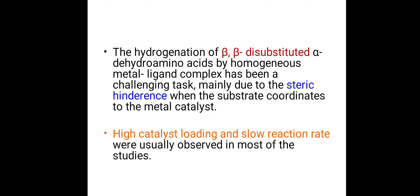The hydrogenation of beta-beta-disubstituted alpha-dehydroamino acids by a homogenous metal-ligand complex has been a challenging task, mainly due to steric hindrance when the substrate coordinates to the metal catalyst. When the substrate — which is now a beta-beta-disubstituted alpha-dehydroamino acid — coordinates to the metal catalyst, the two substituents on the beta-carbon increase steric crowding. Therefore, this hydrogenation requires high catalyst loading and results in a slow reaction rate.